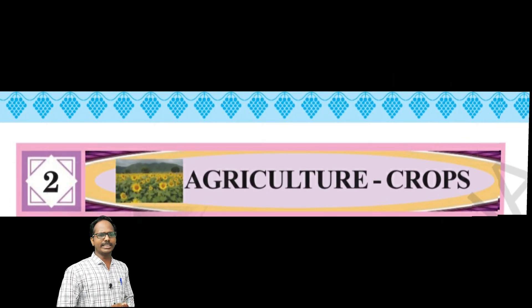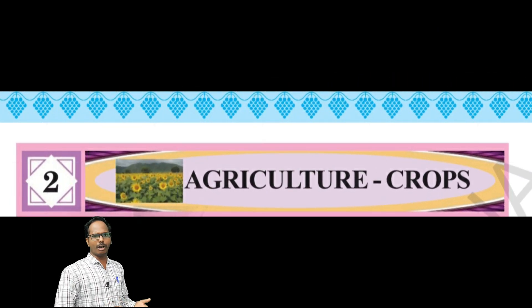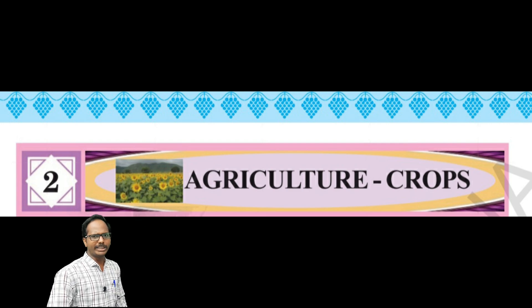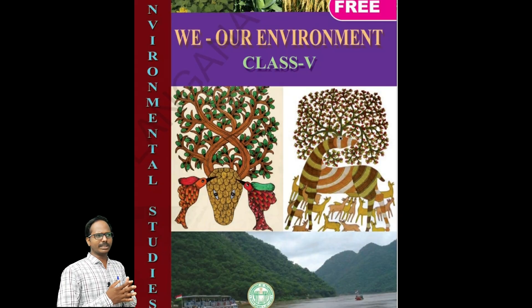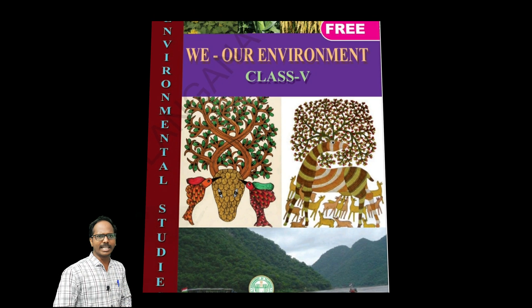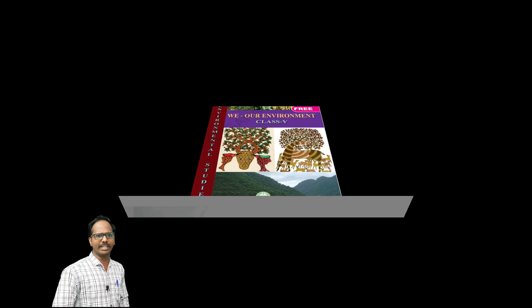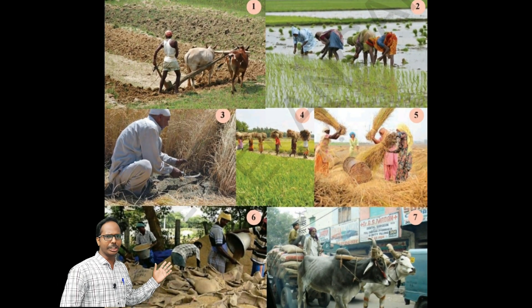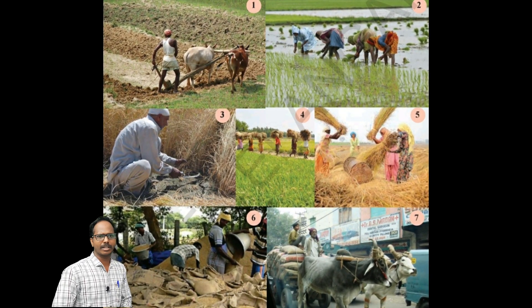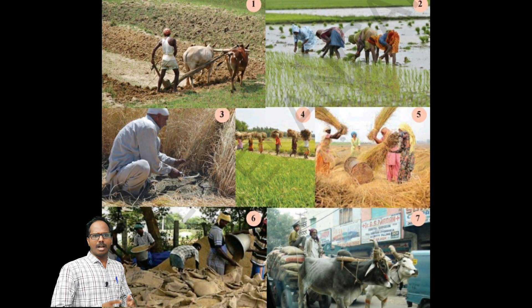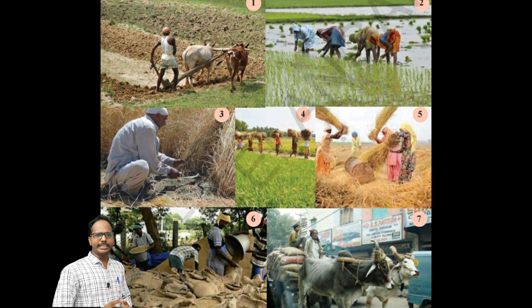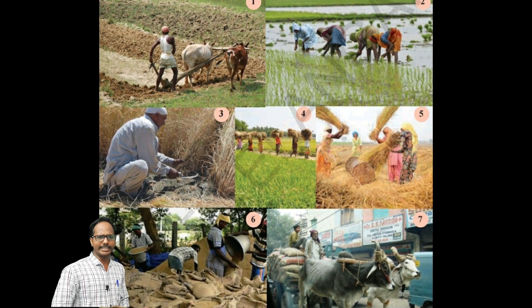Let us discuss our topic: Agriculture and Crops, which is the second lesson in fifth class EBS. Children, observe the picture and discuss with your friends.